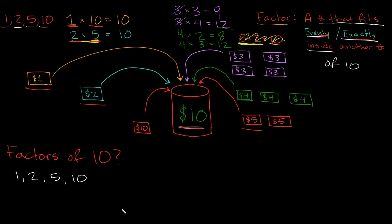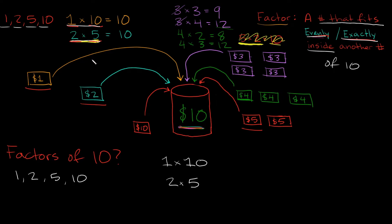Now that you have an idea of what factors are, another way to figure out the factors of a number is by simply asking yourself: what numbers can I multiply together to get 10? I can multiply 1 and 10 together, and I can also multiply 2 times 5 together to give me 10. So these four numbers fit exactly inside of 10.